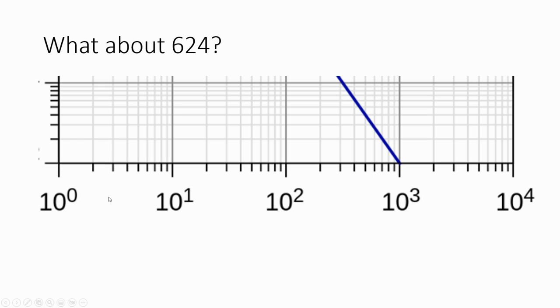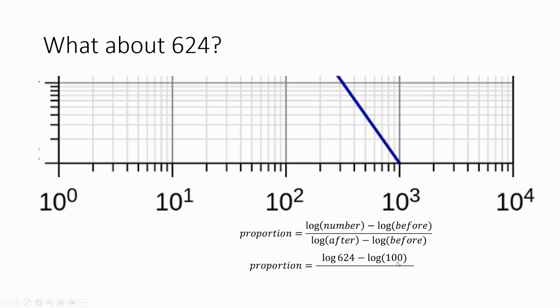Let's look at another example to see that again. So what about 624? We use the same formula. So we're doing exactly the same thing, but we're interested in 624. 624 is obviously between 100 and 1,000. So 10 to the power of 2 is where our 100 is. 10 to the power of 3 is where our 1,000 is. So we do the log of the number we're interested in, 624. Before, we're looking at this 100. So we're subtracting log of 100. Then we're dividing it by log of 1,000, which is our after. Subtracting our before, which is log of 100. Put that into a calculator and you get 0.795.